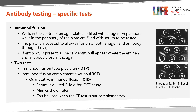When EIA tests are positive, they should be confirmed by immunodiffusion testing. In this test, wells in the center of an agar plate are filled with antigen preparation, and wells in the periphery are filled with the serum to be tested or a control. The plate is incubated to allow diffusion of both antigen and antibodies through the agar. If antibody is present, a line of identity will appear where antigen and antibody meet, as seen in the figure. There are two tests: the immunodiffusion tube precipitin, which measures IgM, and the immunodiffusion complement fixation, which measures IgG. The latter test can be quantitated and is called the quantitative immunodiffusion, or QID, and titers can be derived in one to two steps. This test can be used when the true CF test is anti-complementary.